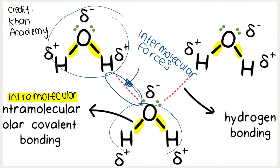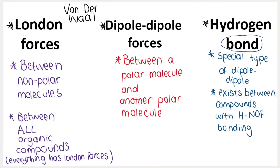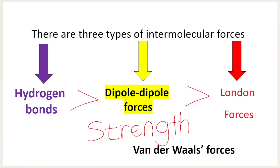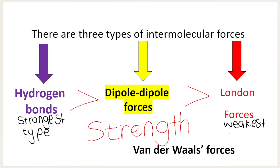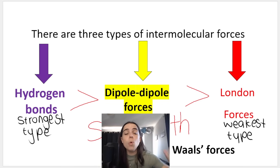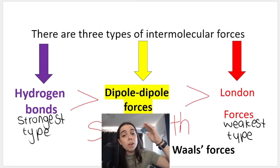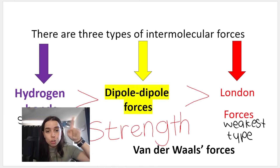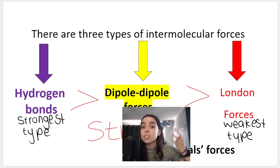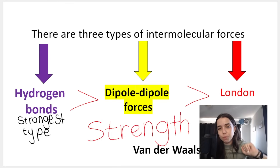Those three intermolecular forces differ in strength. Hydrogen bonds are the strongest type, and London forces are the weakest, with dipole-dipole somewhere in the middle. What we'll cover now is how to take all the homologous series we learned about — from alkanes to esters — and group them according to what intermolecular force they have. For example, alkanes have only London forces, and alcohols have hydrogen bonds and London forces.